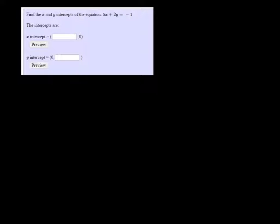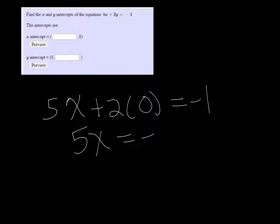To find the x-intercept, I want to plug in 0 for y. So I have 5x plus 2 times 0 equals negative 1. So that's just 5x equals negative 1. x must be negative 1/5.